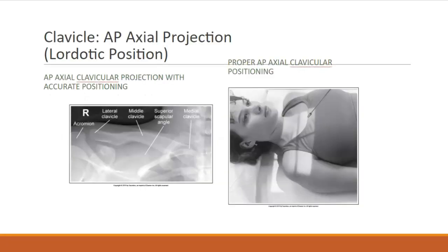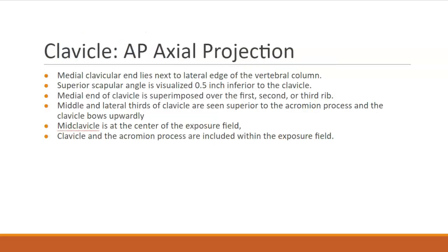Let's move on to the AP axial projection of the clavicle. Image analysis guidelines state that the medial clavicular end lies next to the lateral edge of the vertebral column. The superior scapular angle is visualized and inferior to the clavicle. The medial end of the clavicle is superimposed over the first, second, or third rib. The middle and lateral thirds of the clavicle are seen superior to the acromion process and the clavicle bows upwardly. The mid clavicle is at the center of the exposure field and the clavicle and acromion process are included within the exposure field.